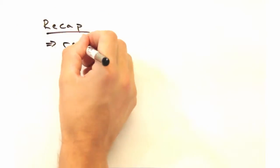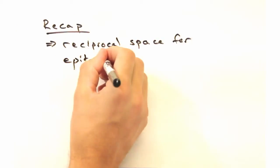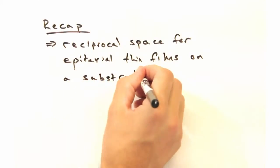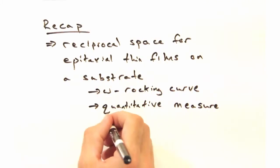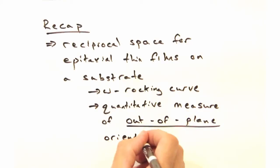So to recap, we looked at the reciprocal space for epitaxial thin films on a substrate. We then introduced the omega rocking curve, which gave us a quantitative measure of out-of-plane orientation.